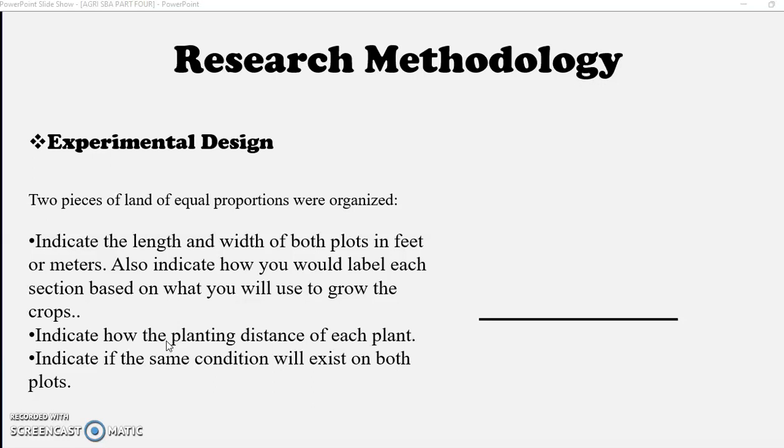Also indicate how you would label each section based on what you will grow. So for example, you could indicate that section A was grown with inorganic or will be grown with inorganic fertilizer, while section B will be grown with inorganic fertilizer. Indicate the planting distance as well and indicate if the same conditions will be existing on both plots.